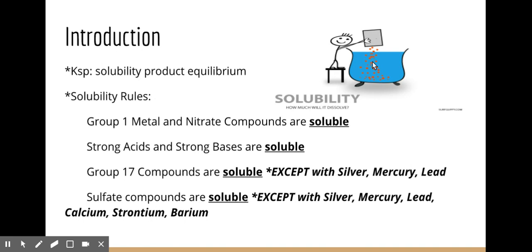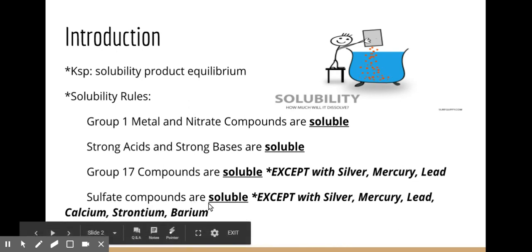Insoluble means it will not break up into its ions; instead, it will form a precipitate in my solution. Sulfate compounds are also generally soluble, except when combined with silver, mercury, lead — we call these the heavy metal bad guys — and also calcium, strontium, and barium. If a sulfate is with any of these six, we classify it as insoluble, meaning it forms a precipitate.